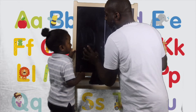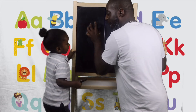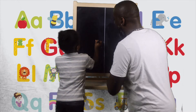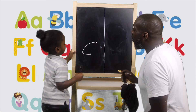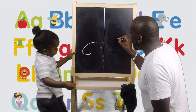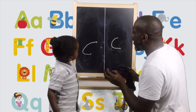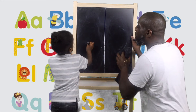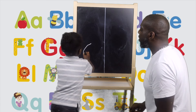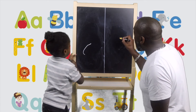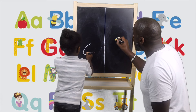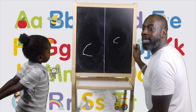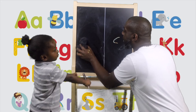Well done. Amari, what's the third letter of the alphabet? C. Well done. And how do we do a C? Start in the middle, around to the middle. Well done. Can we do that one more time for everybody? Start in the middle, around to the middle. Good boy. Can everybody see that? Fantastic.